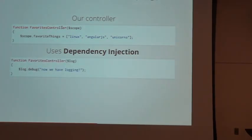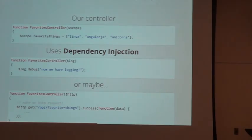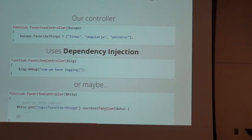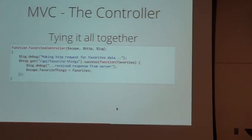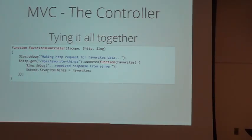Besides scope, we can also inject dollar-sign log for debug, warning, and error logging. We can also ask for dollar-sign HTTP, which lets us make Ajax requests — for example, a GET request to an API URL, and on success execute a callback with the returned data. Combining all three, we can fetch our favorite things from an API instead of hardcoding them: log that we're about to make an Ajax call, make the call, log the response, and set the favorite things variable on our scope to the data returned from the API.